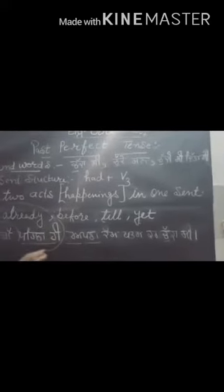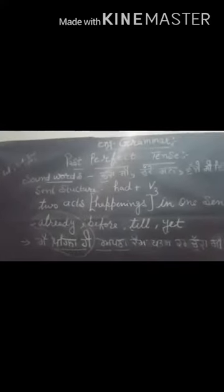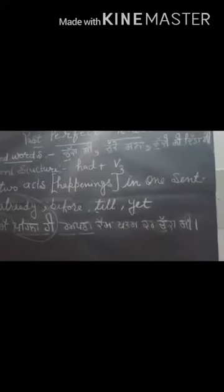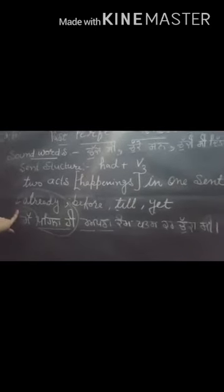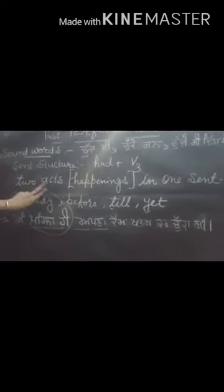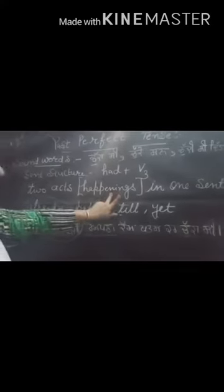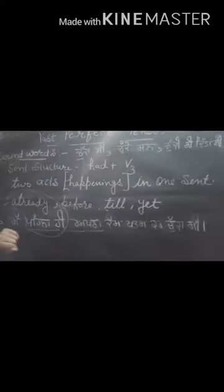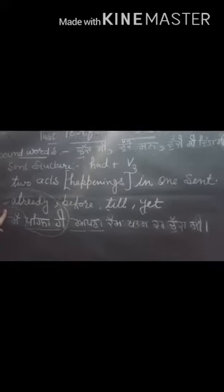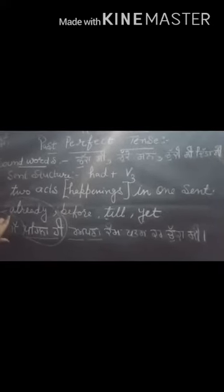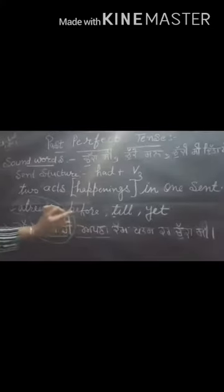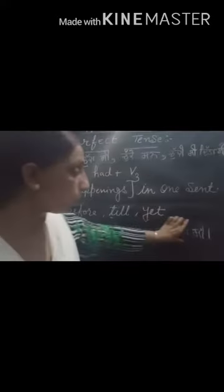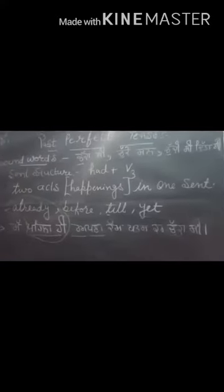Past perfect tense ko hundha hai jis de vich doh kiriya ma ya doh kama ikrii waakde vich dhase gae hundha hai jis vich pehla hi waakde vich pehla kama yedha hoya hundha hai uus de vich had hati dhusre kaam de vich chasi only second form di use kar vee haan thik ya.